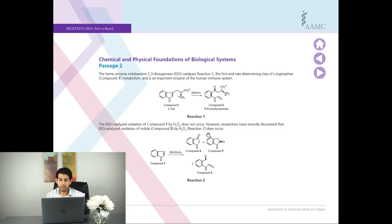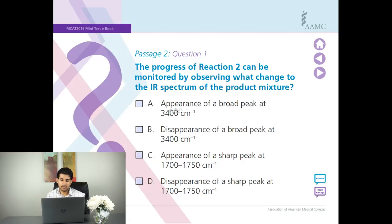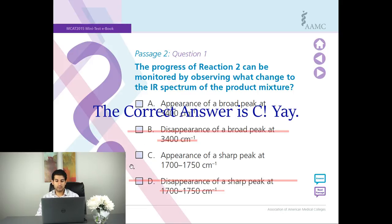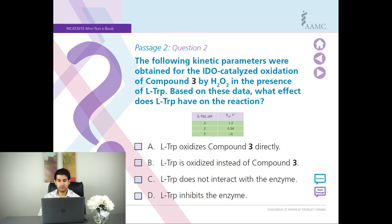So if carbonyls are appearing after our reaction, that means we should have either A or C as an appearance. Now is it 1700 or 3400? They are both numbers that you need to know, but with carbonyls the sharp peak at 1700 is what they look like. So you would pick C.